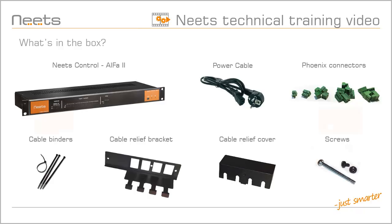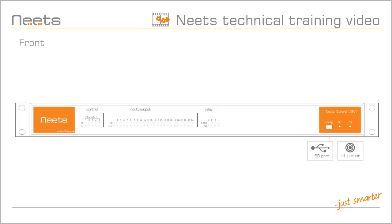If we have a look at the front of the Alpha 2, you have easy access to the USB port, which you can use to configure the Alpha 2. When you are connected to the USB port, you can also use the IR learner on the front to create or edit your device drivers.